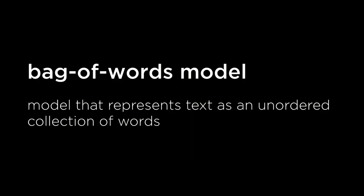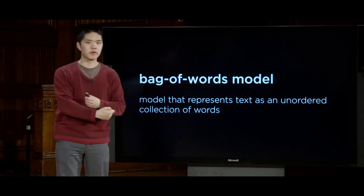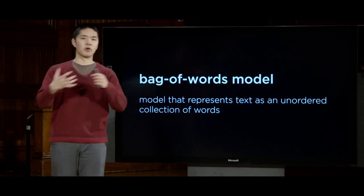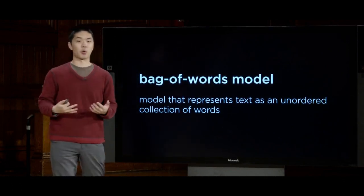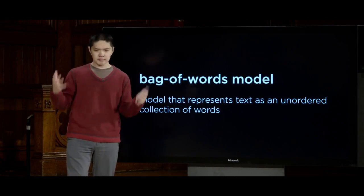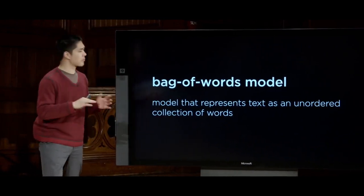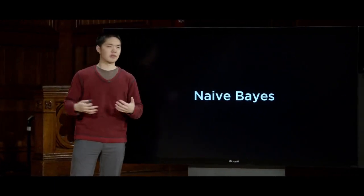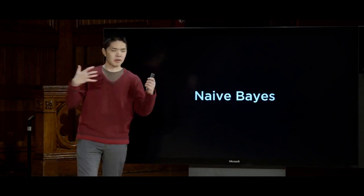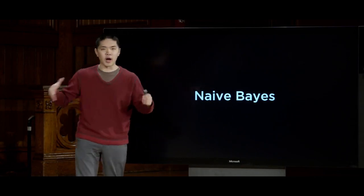One way to approach this is to ignore the structures of sentences — not caring about how words relate to each other grammatically — and instead rely on the words themselves. This approach is generally known as the bag of words model, where we model a sample of text not by caring about its structure but by caring about the unordered collection of words that show up. We just care what words are in the text, not their order or structure, and this approach tends to work pretty well for classification like positive or negative sentiment.